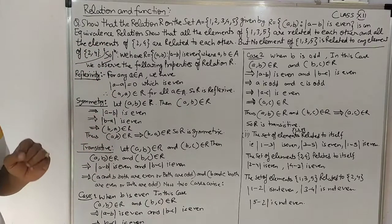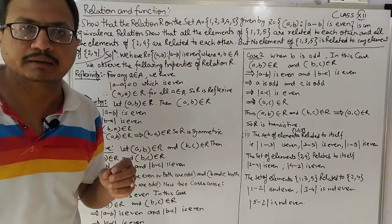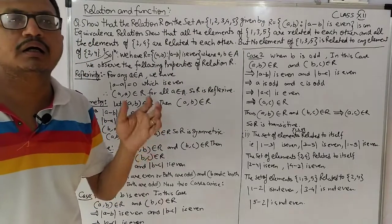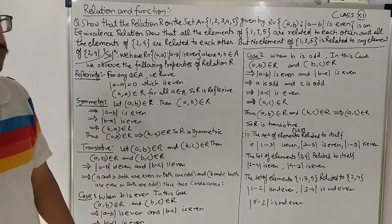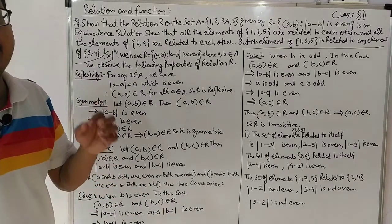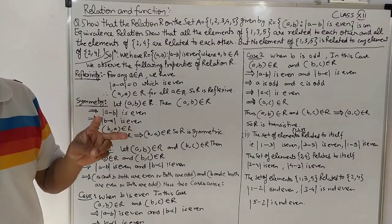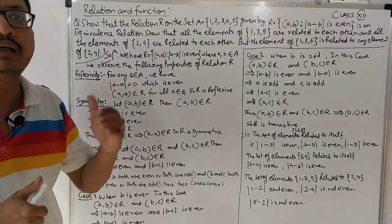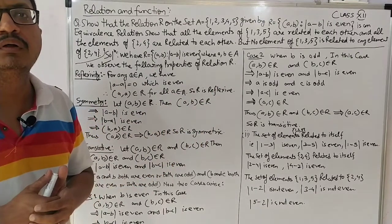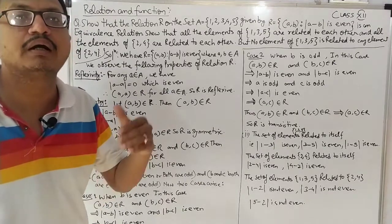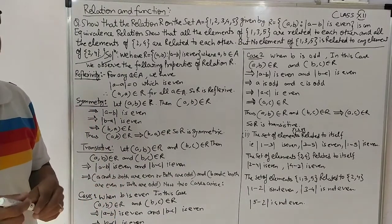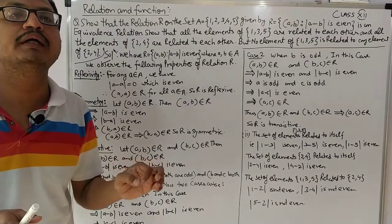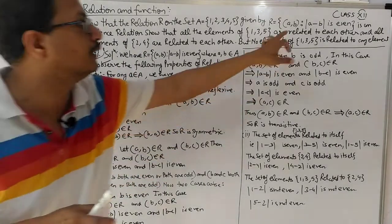इस question को समझाने से पहले एक important बात बता दे रहा हूं। अगर दो numbers का difference even दिखाना है, तो यह बात मालूम होनी चाहिए कि अगर दो even numbers का difference लेते हैं - जैसे 8-2=6 (even) - लेकिन 8-5 करेंगे तो odd number आएगा। ऐसे ही 9-7 करें तो even number आएगा। यानि relation तभी satisfy होगा जब दोनों numbers या तो even हों या दोनों odd हों।